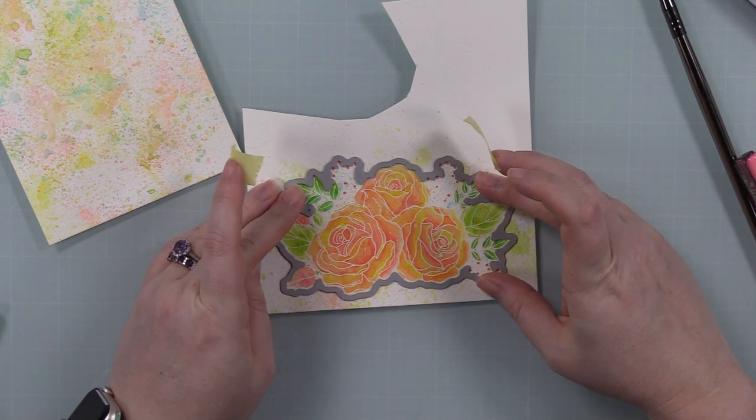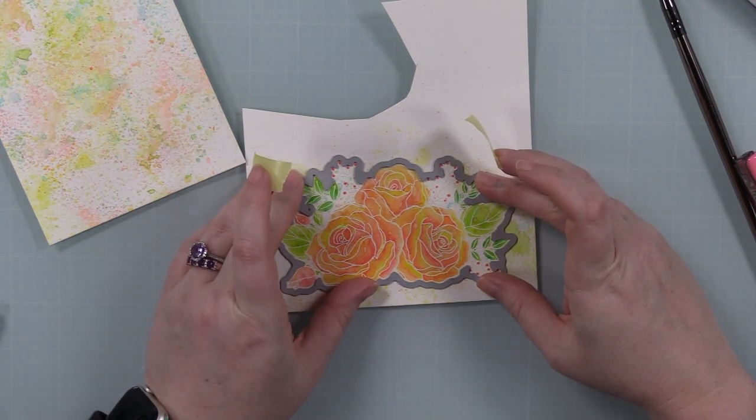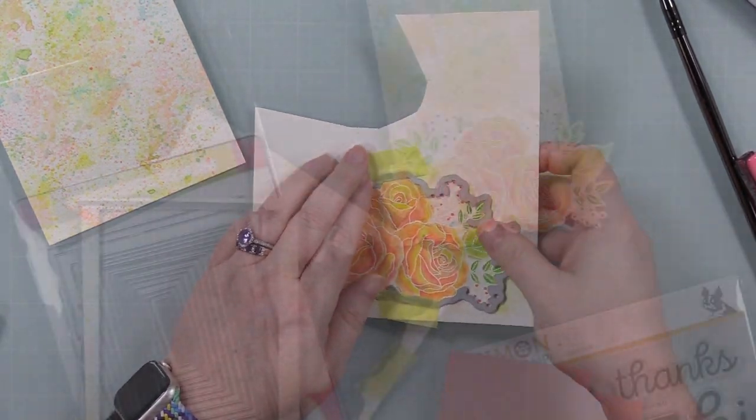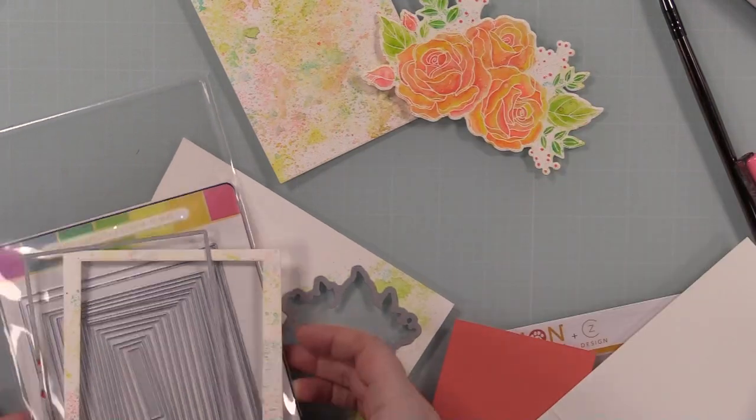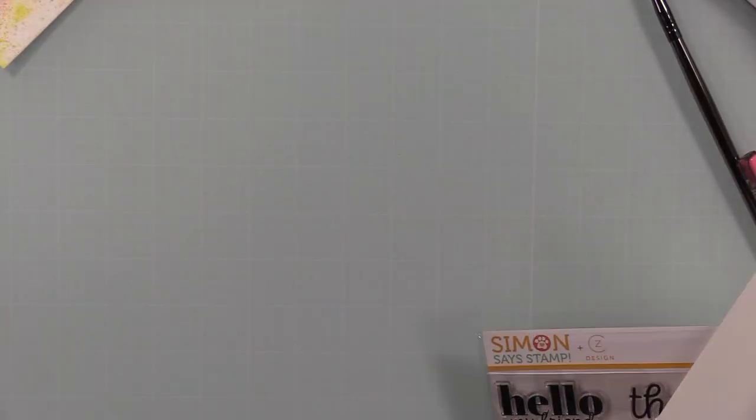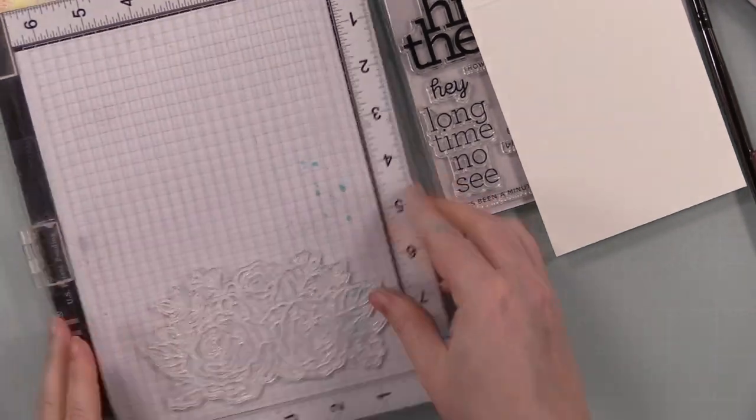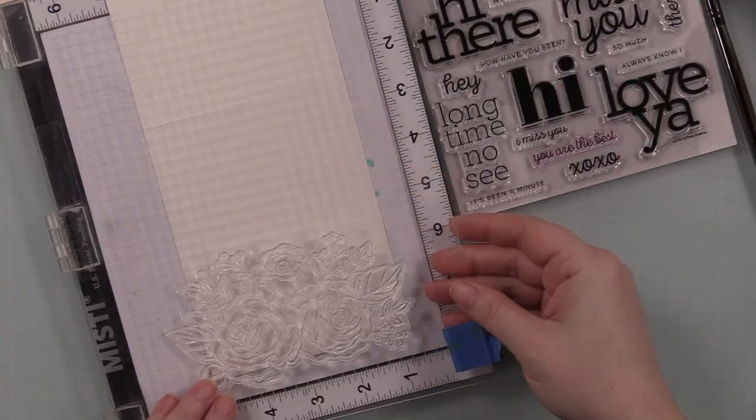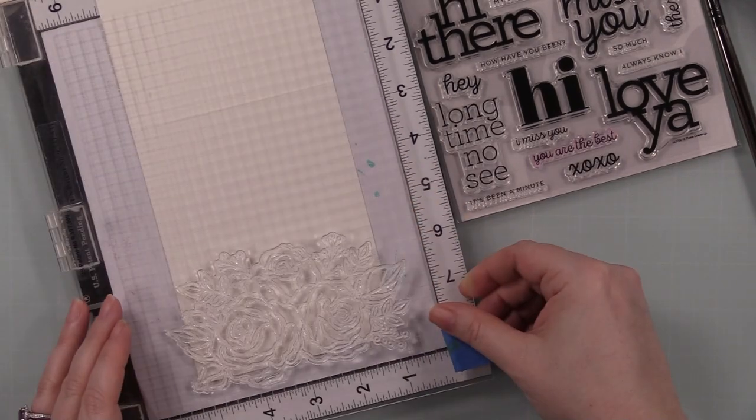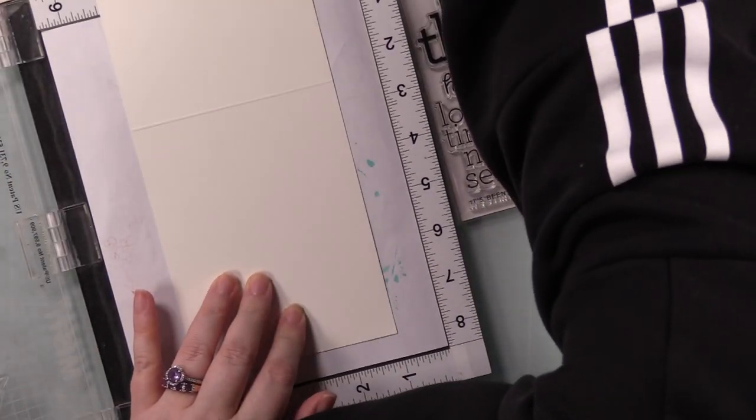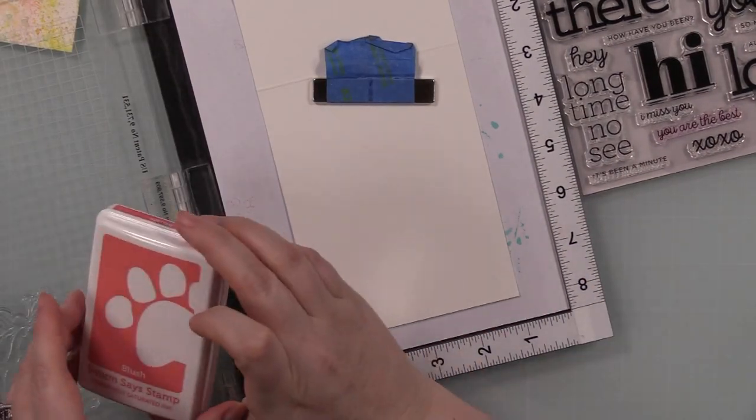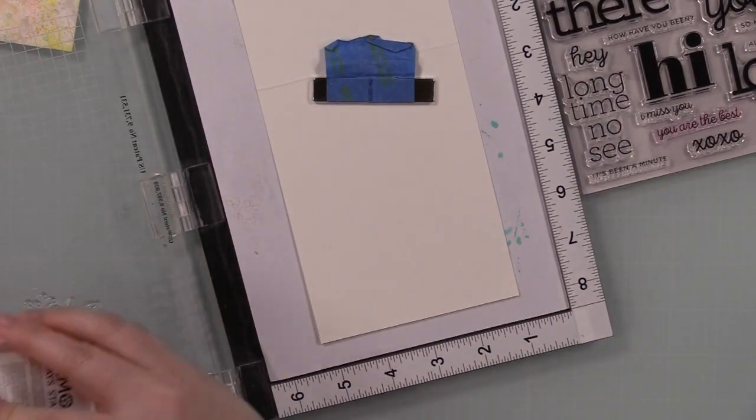I used the coordinating wafer die for the Forever Yours stamp set to die cut the floral. I also die cut the background with a rectangle wafer die to be smaller than my A2 card front. I still had the image in my MISTI, so I took my card base - a top folding white A2 size note card, 4.25 by 5.5 inches - put that in my MISTI, lined it up with that image, and inked up the stamp with Simon's Blush ink. I stamped that, then cleaned it off and took it out of my MISTI.